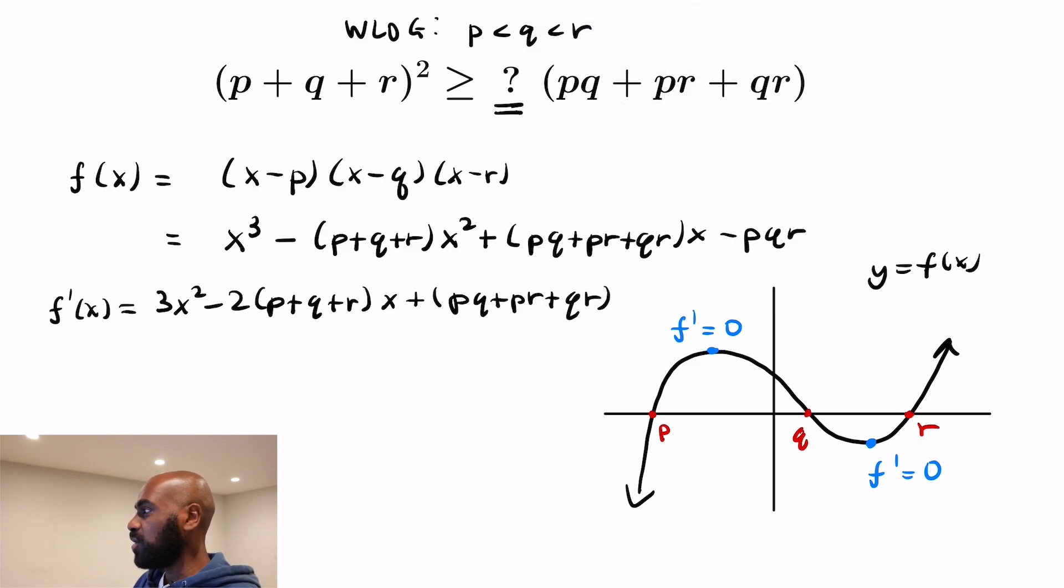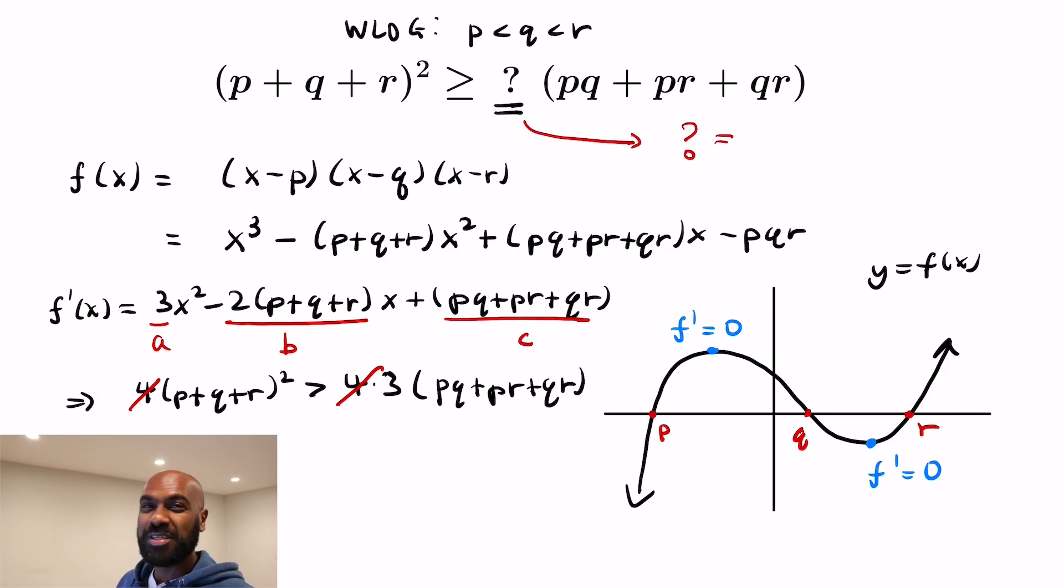So this quadratic now we know has two distinct roots. So its discriminant, the B²-4AC part, has to be strictly positive. So if we let A be 3, B be the middle term, C be the last term, we get that 4(P+Q+R)² has to be greater than 4·3·(PQ+PR+QR). That is saying B² is greater than 4AC. Now dividing each side, we see then that we can make the question mark actually a 3.